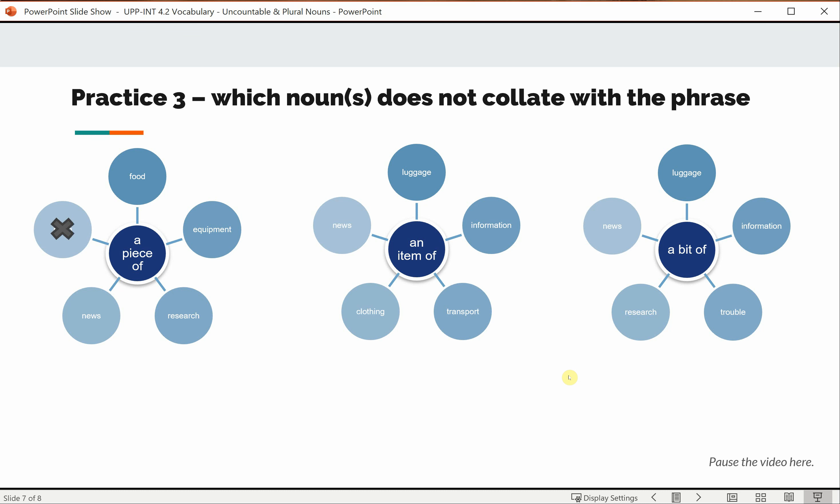For the first one, room. We do not say in English a piece of room. We say a bit of room, meaning a bit of space.